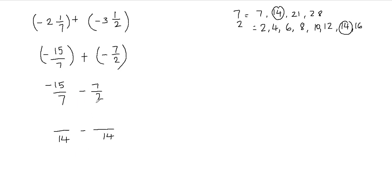So multiplying the denominators is also an option, but this is not always going to work. You can still go with that option by just multiplying the denominators, but then at the end you will have to reduce the fractions because you're going to end up with bigger numbers if you don't get the least common multiple. So I would recommend the listing method because this method of finding the least common multiple will always work.